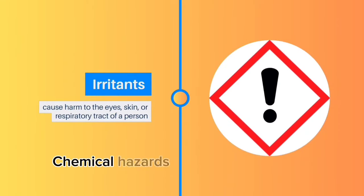Irritants: Chemical hazards that are classified as irritants cause harm to the eyes, skin, or respiratory tract of a person. Irritants are either highly, moderately, or slightly water-soluble. The hazards can manifest as redness, rashes, inflammation, coughing, or hemorrhaging.